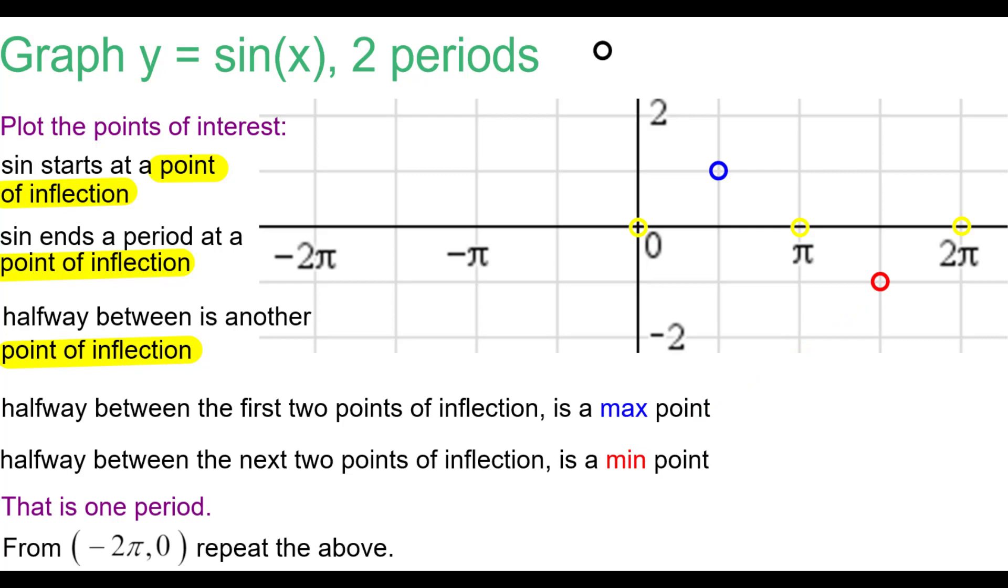From negative 2π to 0, we're going to repeat that same thing. So we'll start at negative 2π, 0. It starts at a point of inflection. Then it goes to a max, then to a point of inflection, to a min, and then the origin, of course, back to a point of inflection.